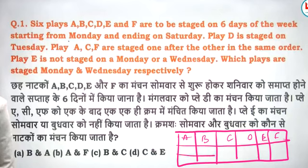Alright, so we will see which day. We have to stay six days of a week — 1, 2, 3, 4, 5, 6 days. Starting from Monday and ending Saturday. So here Monday is starting. D stays on Tuesday.